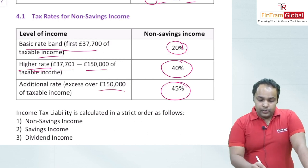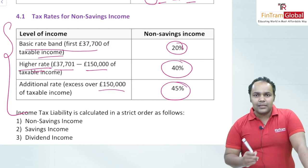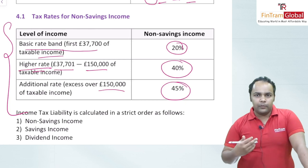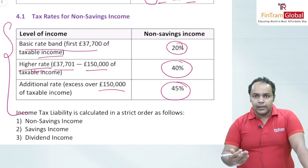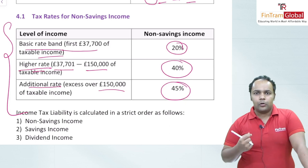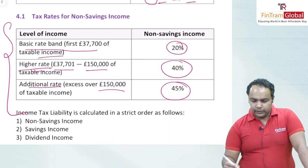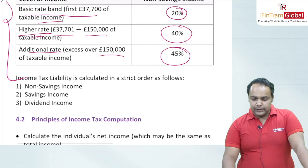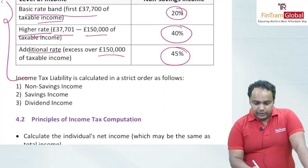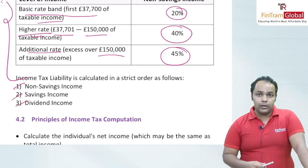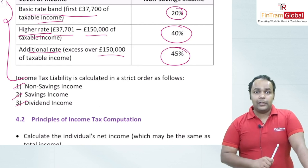The tax rate bands for non-savings income are: the first £37,700 of taxable income is taxed at 20% (basic rate band); between £37,701 and £150,000 is taxed at 40% (higher rate band); and excess over £150,000 is taxed at 45% (additional rate band). Income tax liability is calculated in strict order: non-savings income first, then savings, then dividend — the same order as personal allowance deduction.